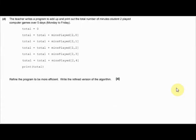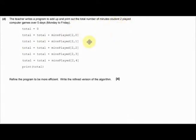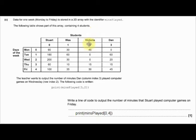The next question stays on this 2D array. The teacher writes a program to add up and print out the total number of minutes student 2 played computer games over 5 days, Monday to Friday. They've given us the code. We start off by declaring total equals 0, then we're adding to that total. So new total equals total plus mins_played[2][0]. Column 2 is student 2 - that's Victoria. Row 0 is Monday. So 2,0 is 45. Total equals total plus 45. Total now holds 45. Then mins_played[2][1] - Victoria, Tuesday - adds 0.